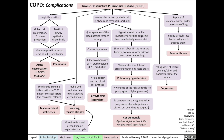Hypoxic alveoli also cause the pulmonary arterioles perfusing them to reflexively vasoconstrict. Remember, it's a reflex — blood vessels can sense when alveoli don't have enough oxygen inside them and can constrict, which shunts blood towards those alveoli with greater oxygen content. But in COPD, since most alveoli in the lungs are hypoxic, hypoxic vasoconstriction occurs across the entire lung. Vasoconstriction will increase the blood pressure within the lung vasculature, resulting in pulmonary hypertension over time.